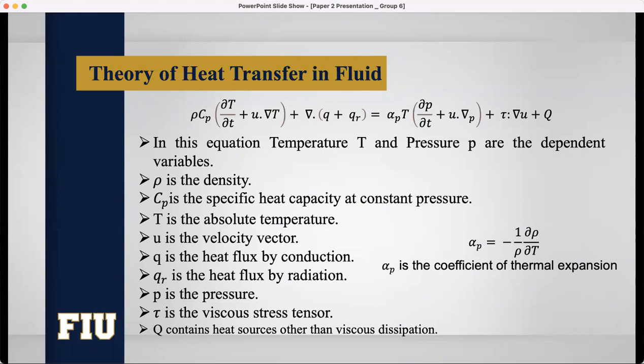Here, the temperature T and pressure P are dependent variables. Rho is the density. Cp is the specific heat capacity at constant pressure. T is the absolute pressure. U is the velocity vector. Q is the heat flux by conduction. QR is the heat flux by radiation. P is the pressure. Tau is the viscous stress tensor. Q contains heat sources other than viscous dissipation. Alpha P is the coefficient of thermal expansion. And we can explain alpha as alpha equals to 1 by rho delta rho by delta T.